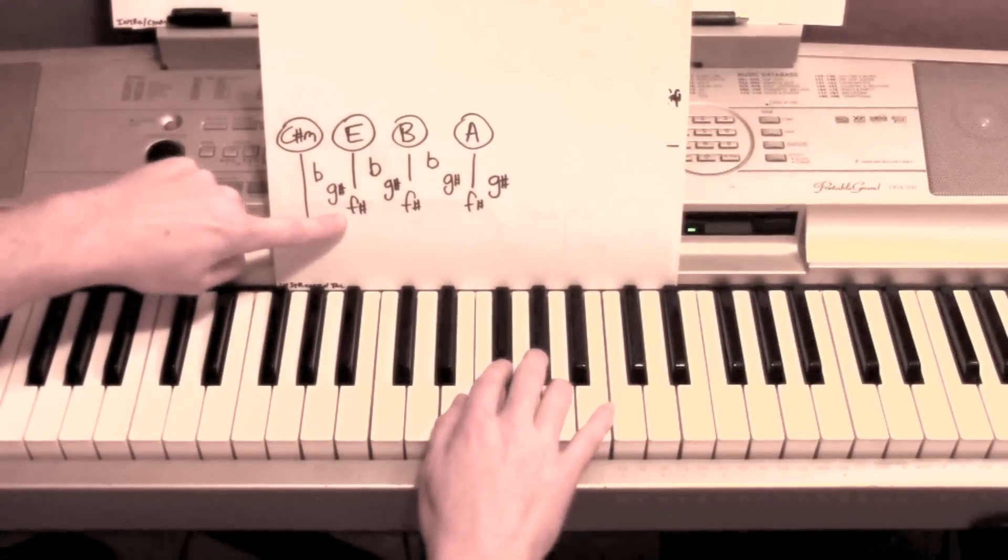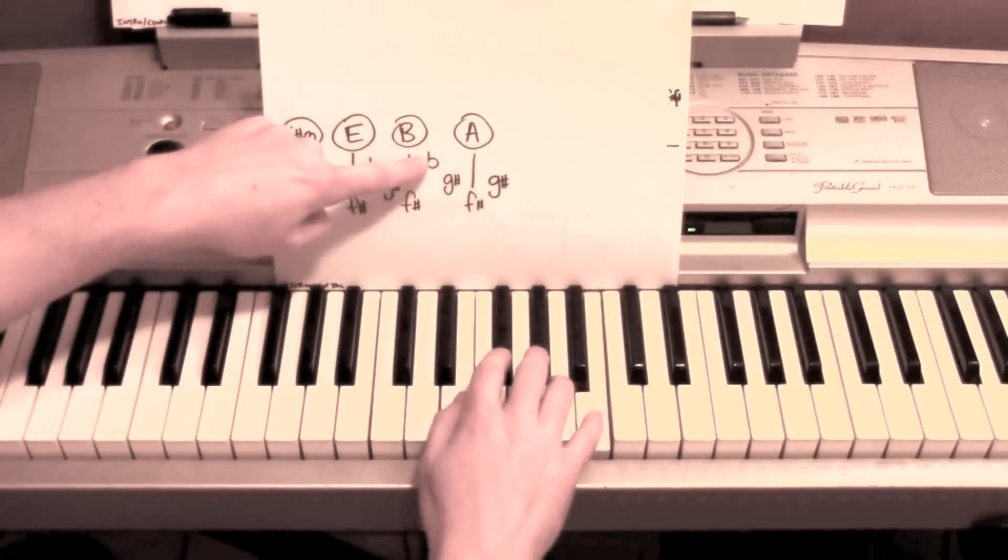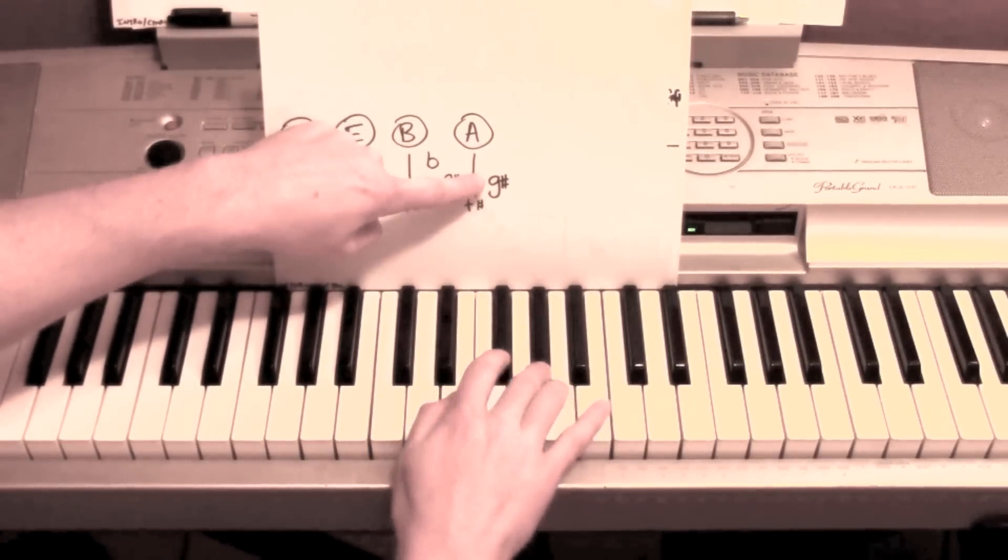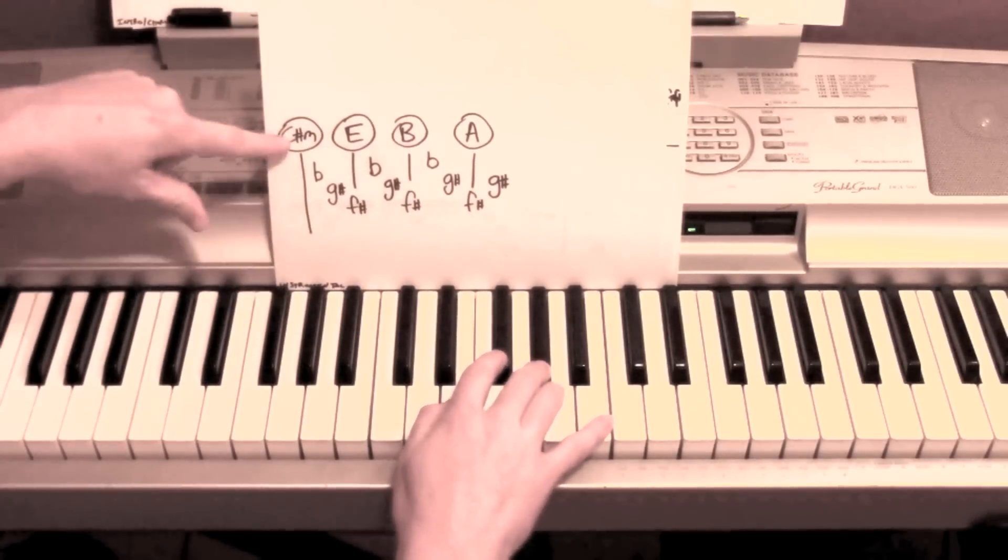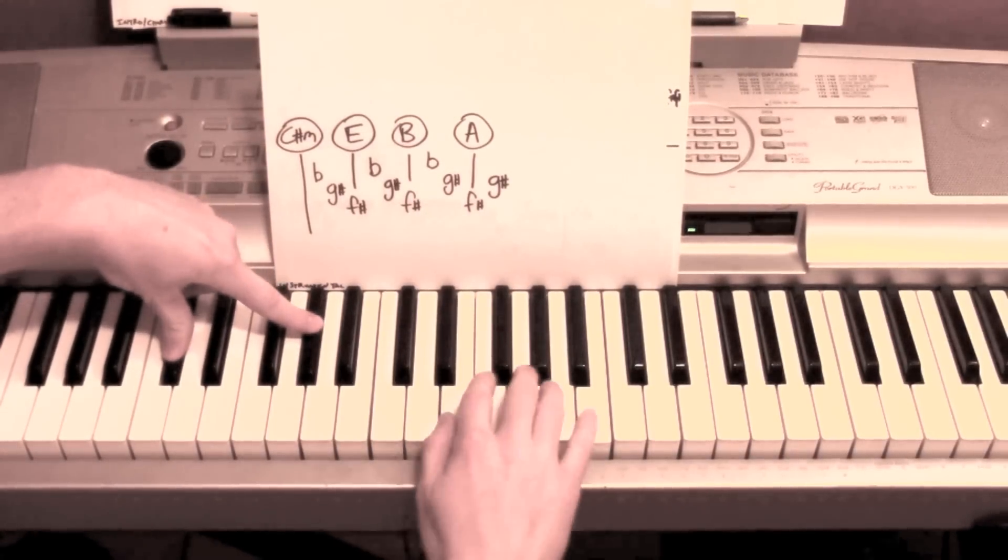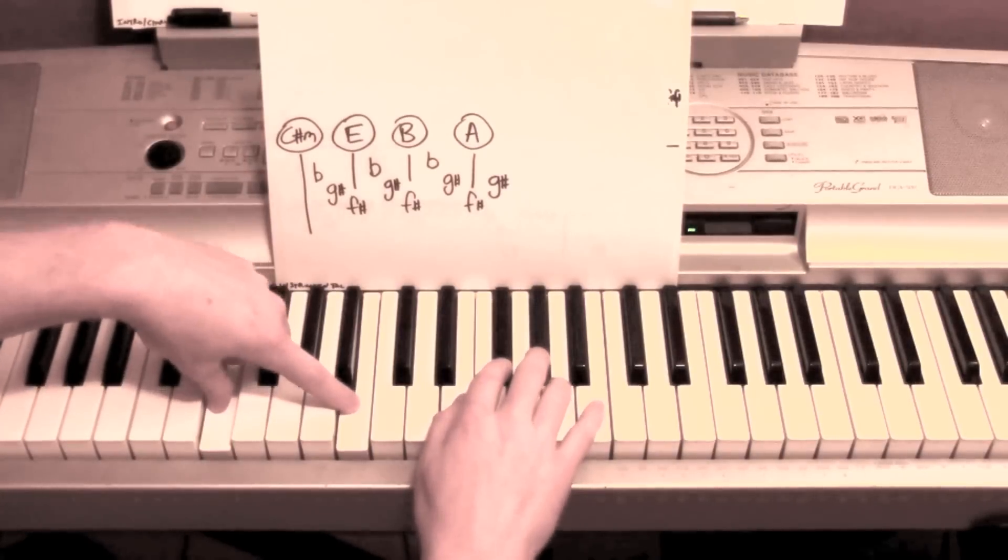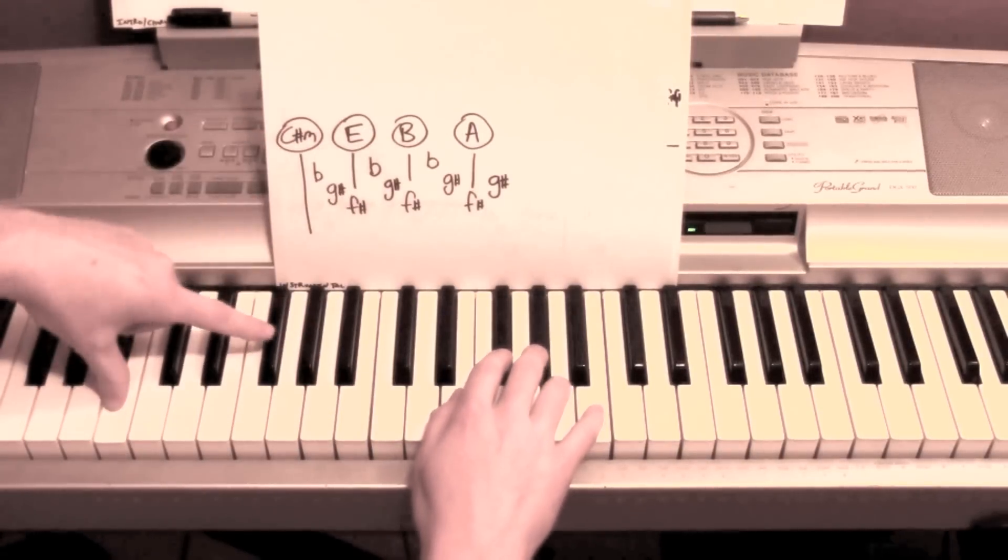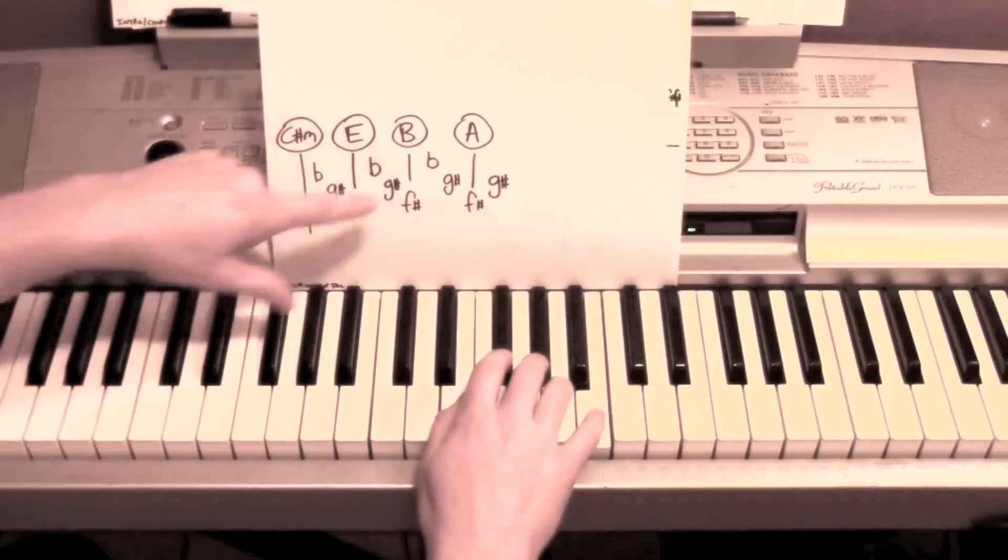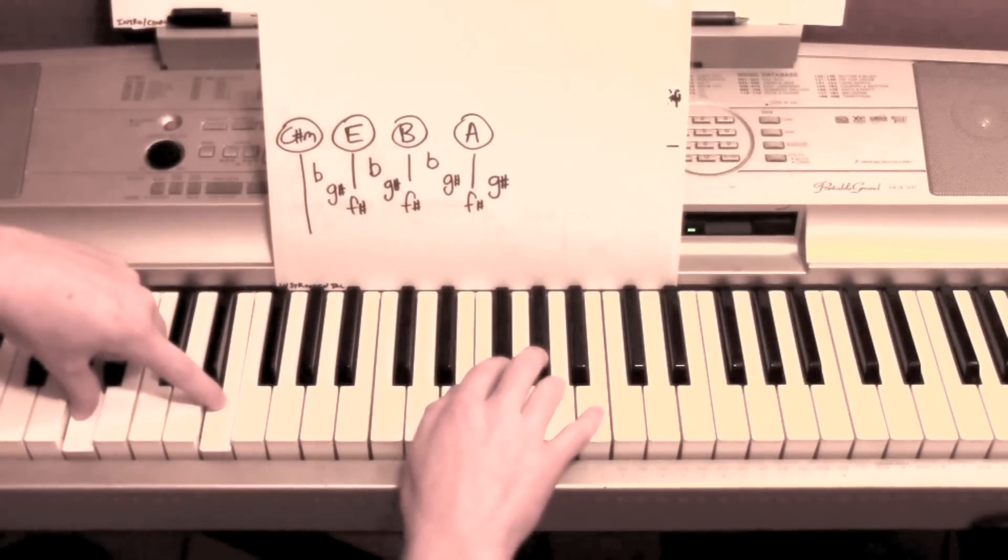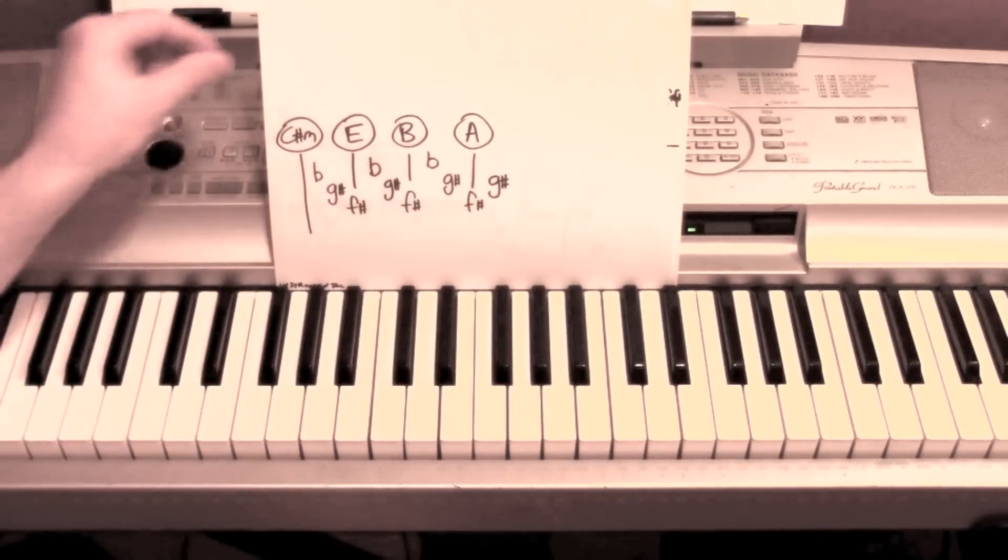B, G sharp, F sharp, B, G sharp, F sharp, B, G sharp, F sharp, G sharp. Left hand using the same chord, start from the left hand first. And all together. All together. All together. That repeats a couple of times.